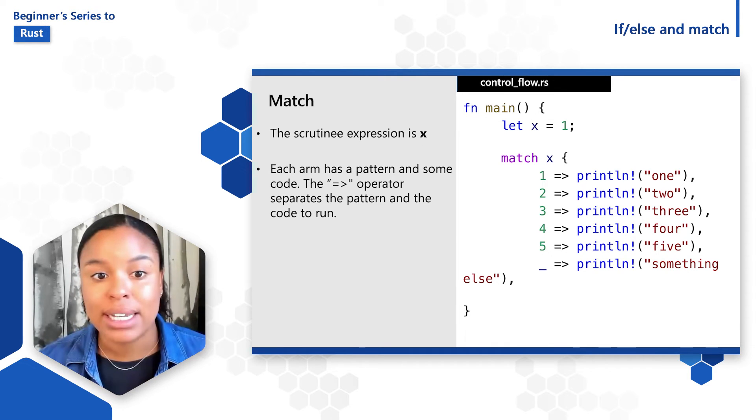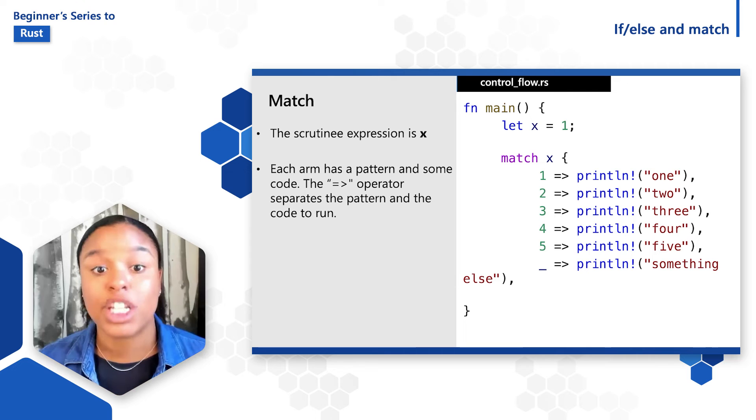Each arm has two parts: a pattern and some code. The arrow operator separates the pattern and then the code to run. The code is executed for the first pattern that matches.